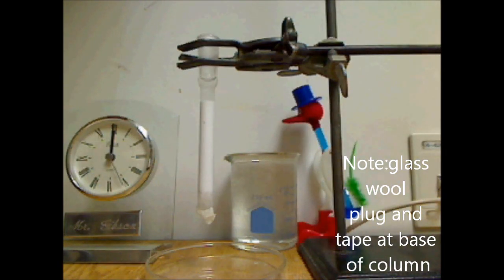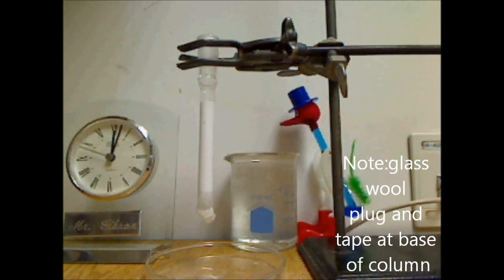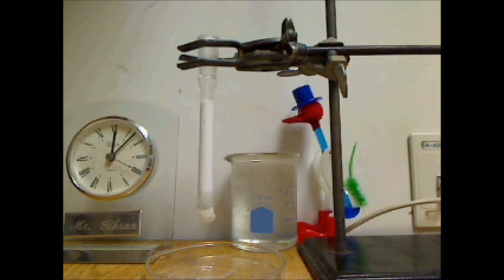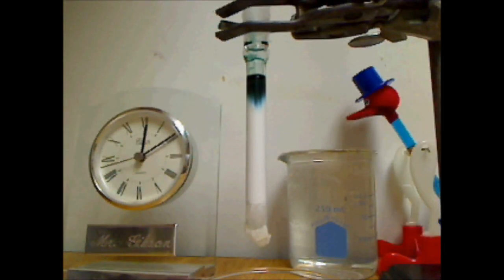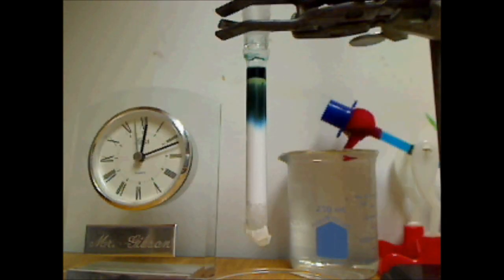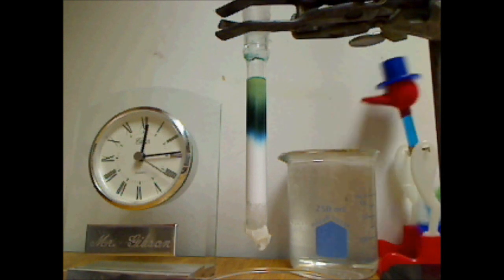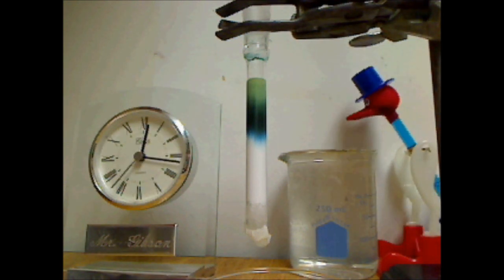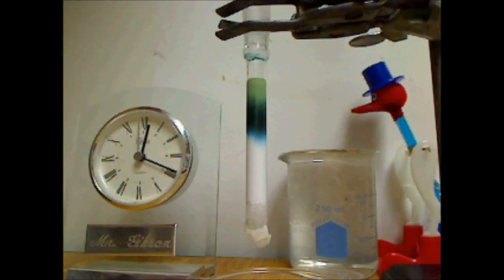Here's my column full of alumina, and I'm running the water mobile phase through first of all. Once that's gone, I've put in my sample of black ink from a black pen. Now you can see the black ink is being split into two here.